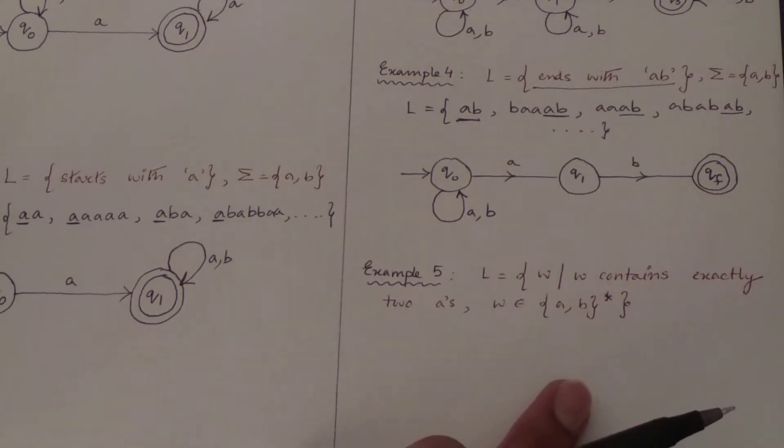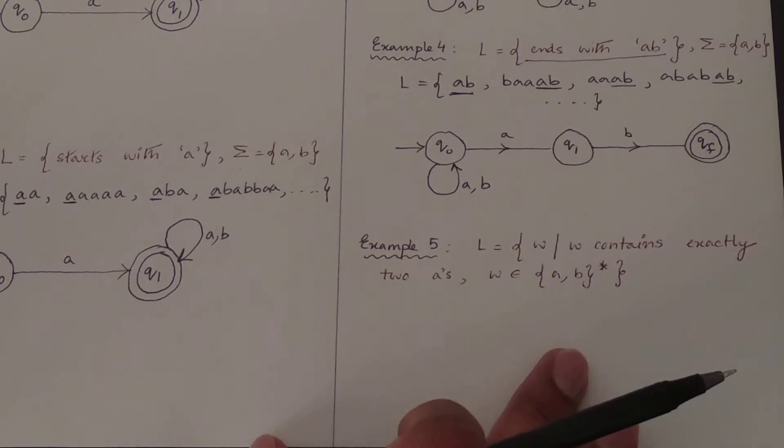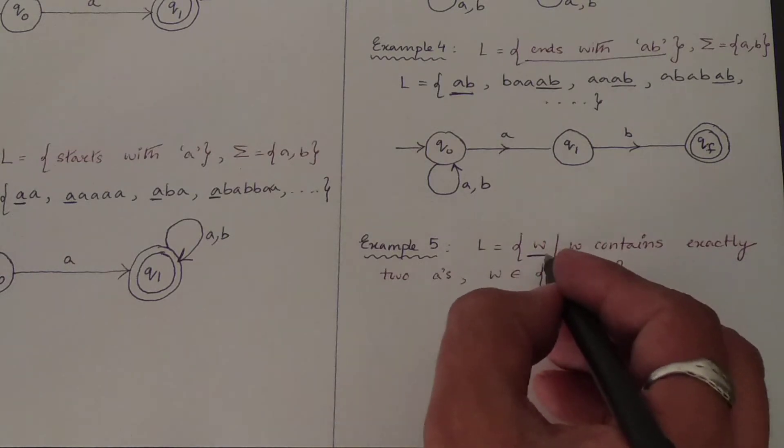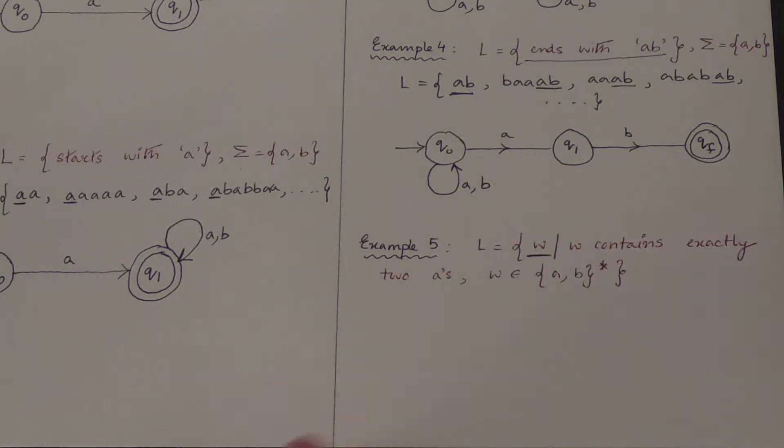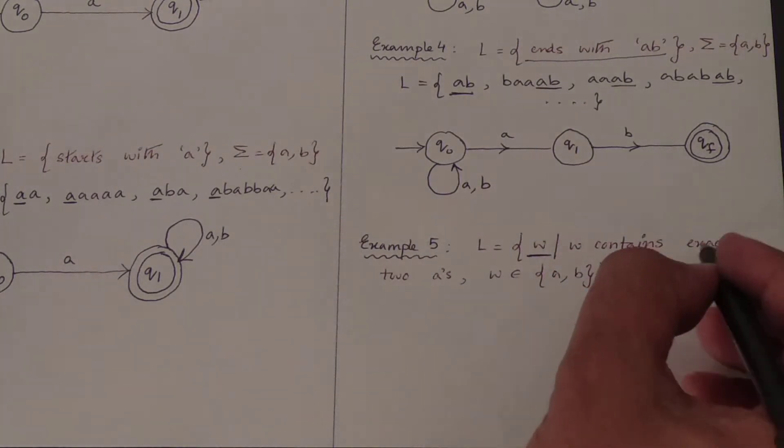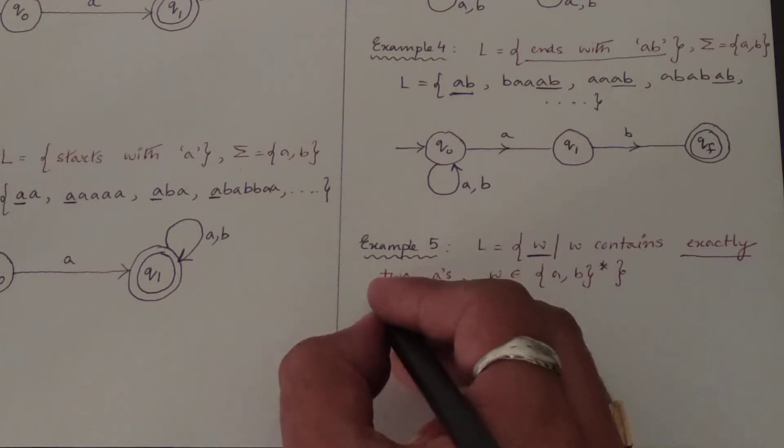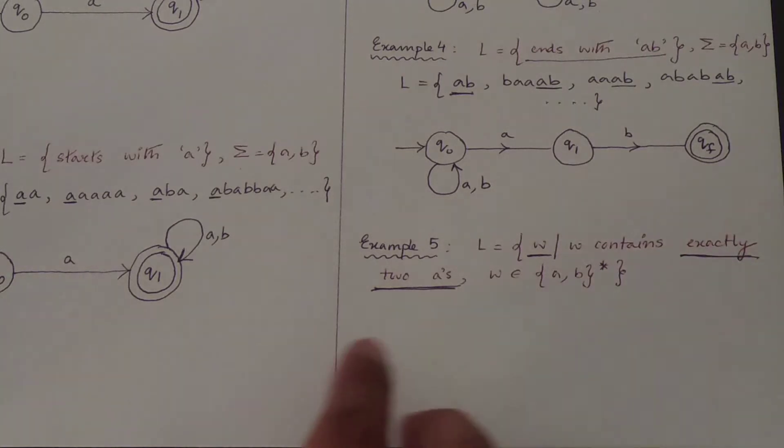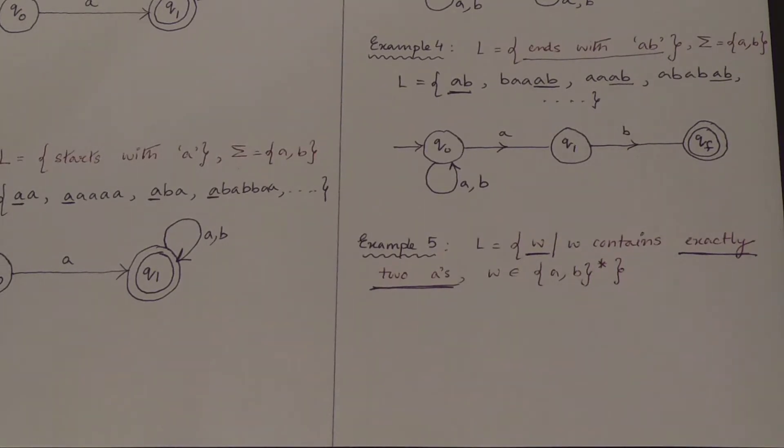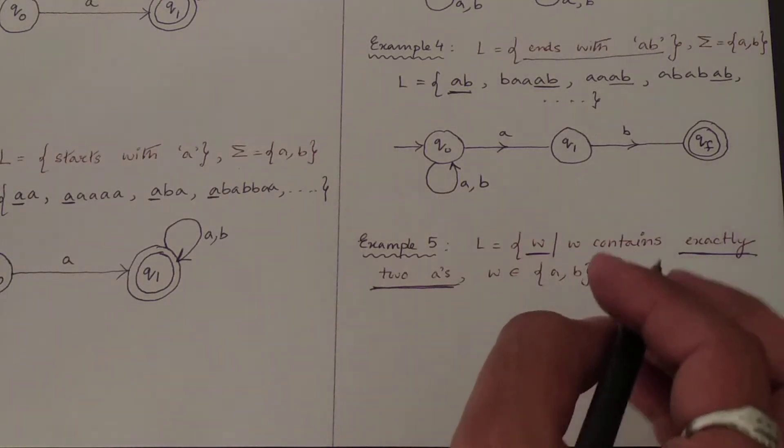Now we will be starting with a few more examples which comprise a format like this, where a language is given to you and W will be given to you. A particular alphabet will be given to you and this W is nothing but a collection of strings which contains exactly two A's. So now we will be looking into this format.